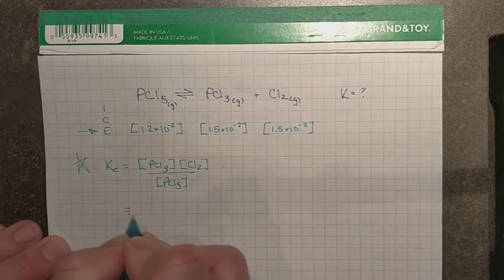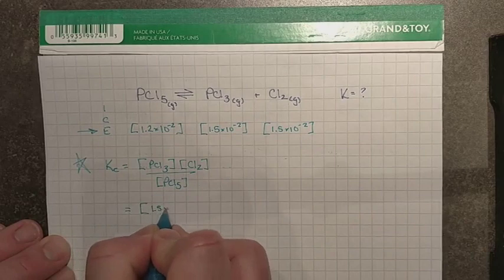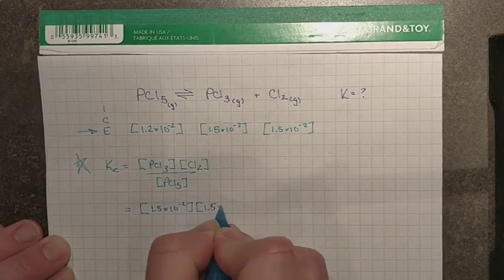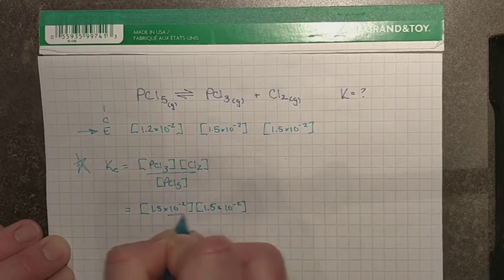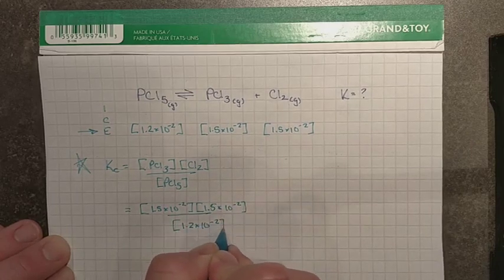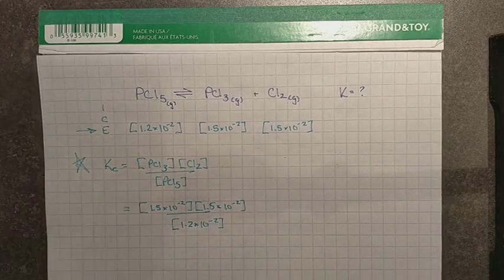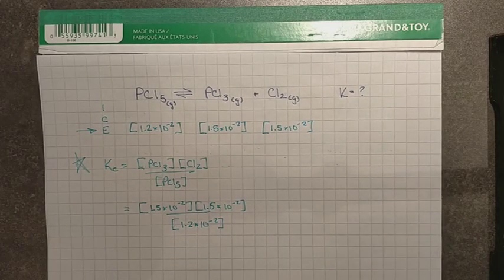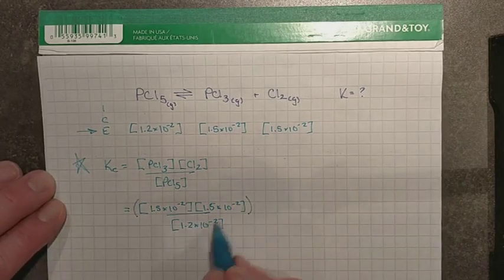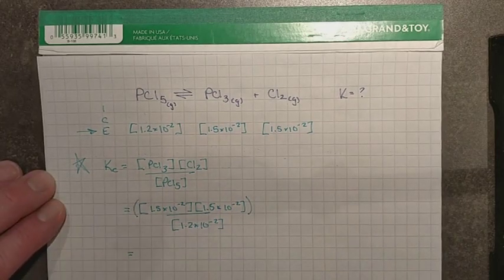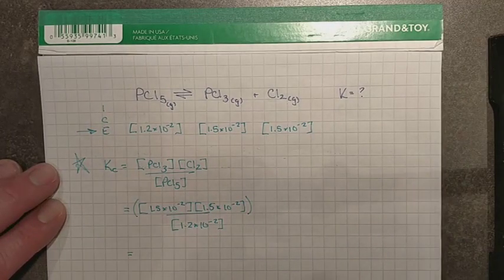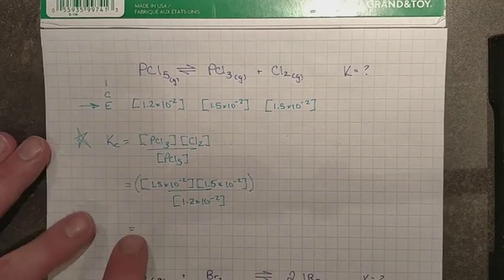Now we can put those in. PCl5 is 1.5×10^-2. Same thing for chlorine gas. And this is 1.2×10^-2. So we now have this. This just has to go through your calculator the right way. Don't forget, you have this entire numerator to resolve before you divide. So if this goes into your calculator the right way, and yes, there's a shortcut available for the numerator here, if it goes in the right way, you end up with a very small number.